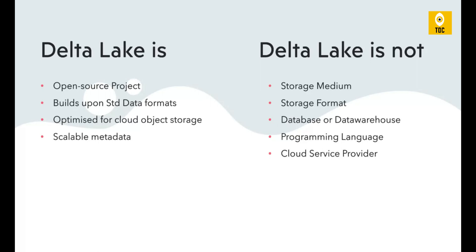Delta Lake is built on standard data formats. For example, the Delta file format is built on top of the Parquet file format. Delta Lake is also compatible with other file formats like Avro and JSON. You can build a Delta Lake on top of any kind of file format, but the major format used for optimized storage and compute is Parquet. It is also optimized for cloud object storage — whether you use Azure, GCP, or AWS as your back-end cloud storage.